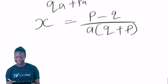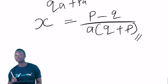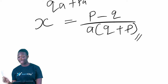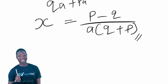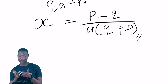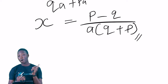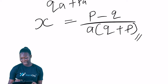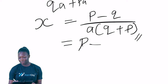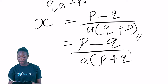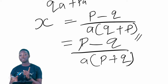So our final answer for the first question — making x the subject of (1 + ax)/(1 - ax) = p/q — is: x = (p - q) / [a(q + p)].